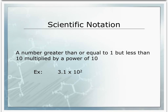What is scientific notation? Scientific notation is a number greater than or equal to 1 but less than 10, multiplied by a power of 10. In our example, this is our number that is greater than or equal to 1 but less than 10, and here is our power of 10. Scientific notation helps us to use very large numbers or very small numbers when doing calculations.